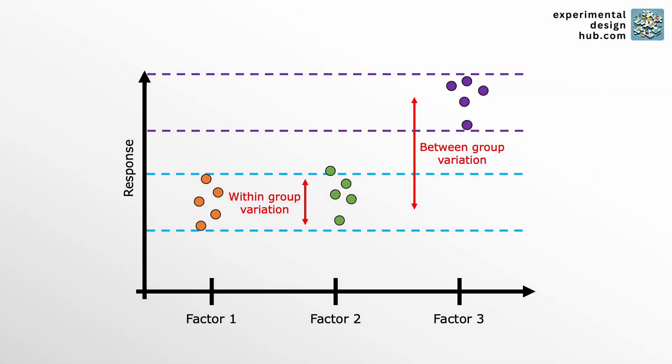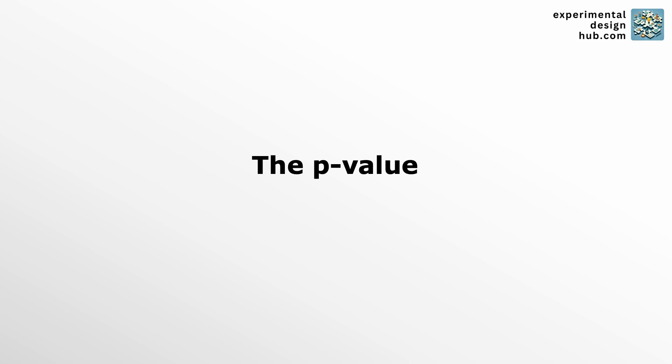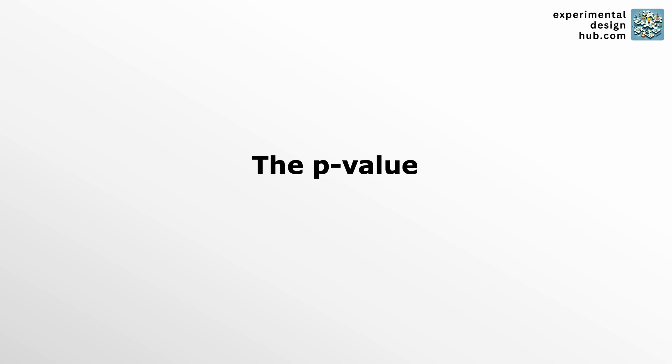And in practice that usually works through comparing the p-values. The p-value in ANOVA shows how likely it is that the differences we observe within our data are due to chance. If the p-value is low, usually less than 0.05, it means that the differences are likely real with a 5% chance of being wrong.